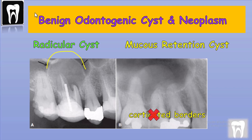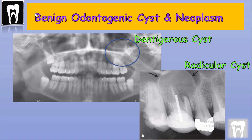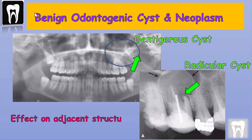This thin radiopaque cortical line is in contrast to mucous retention cysts, which show no saddle appearance and no thin radiopaque cortex. In addition, a cyst or benign odontogenic neoplasm can cause displacement of teeth, and sometimes external root resorption, whereas mucous retention cysts have no effect on adjacent anatomical structures.